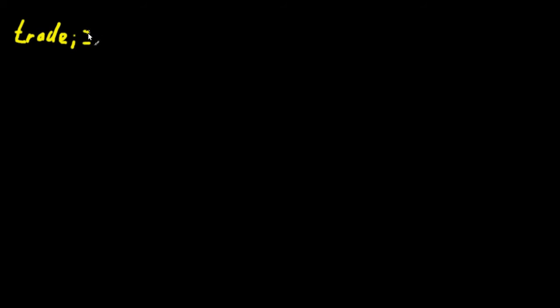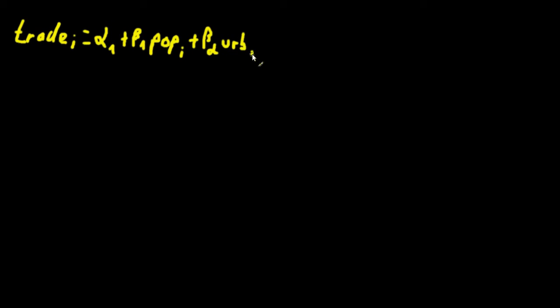Say you want to know what determines the volume of trade in a sample of big European cities in 1800. So you construct a model and your dependent variable is the volume of trade, measured on some arbitrary values — trade of city i. We obviously need a constant, so we include alpha 1. What determines the volume of trade? I would say population, urbanity, and some sort of GDP measure are very good explanatory variables. So our model will be: plus beta 1 times the population of city i, plus beta 2 times a measure of urbanity of city i, plus beta 3 times the GDP in this city.